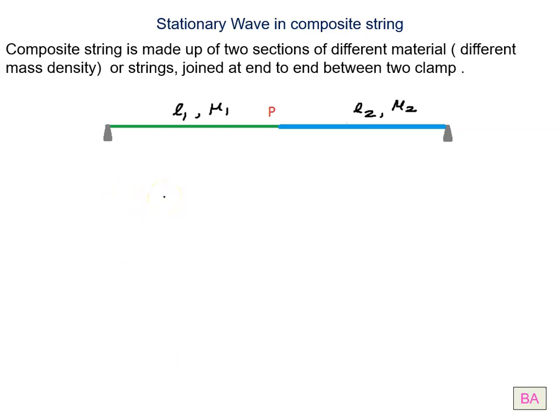I will show you two strings. Green and blue. Green is L1, linear mass density is mu1. Blue is L2, linear mass density is mu2.